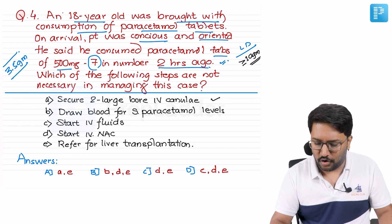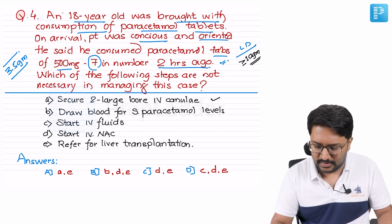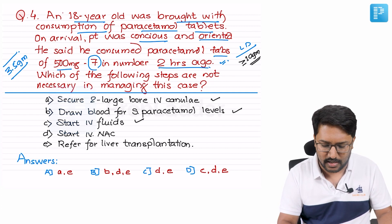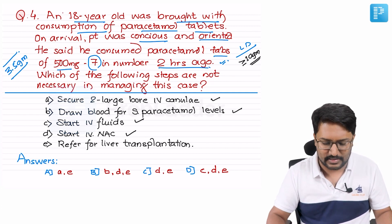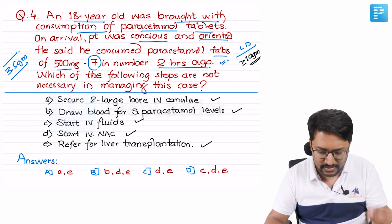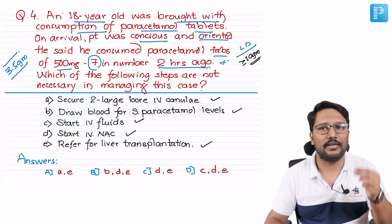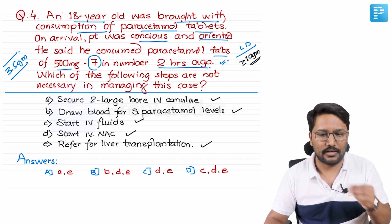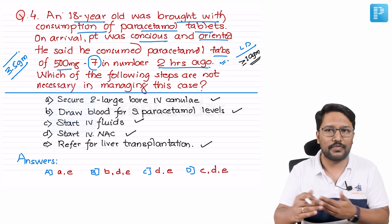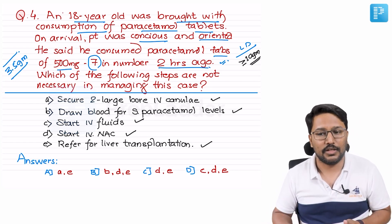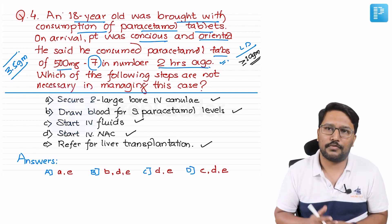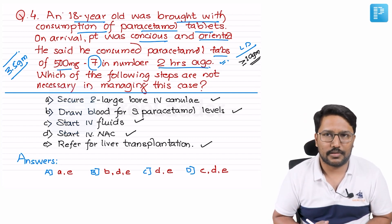The options are: secure two large-bore IV cannulas, draw blood for serum paracetamol levels, start IV fluids, start N-acetylcysteine, and refer for liver transplantation. The answers are combinations of these actions — pick which ones are not necessary for this patient.